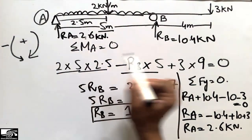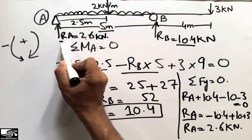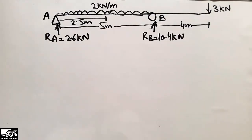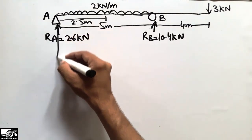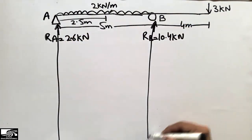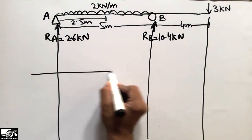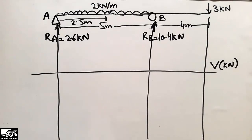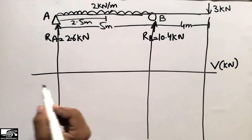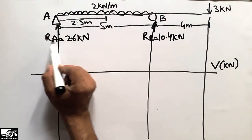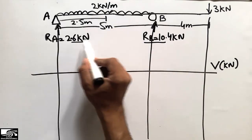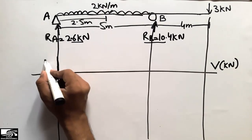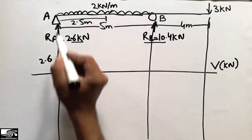Now we proceed to find the shear force and bending moment diagrams from these two reactions. We draw the reference lines first — the shear force is represented by V in kilonewtons. Starting from the left side of the beam: RA is 2.6 kilonewtons and RB is 10.4 kilonewtons. At point A, we move up to 2.6 kilonewtons.